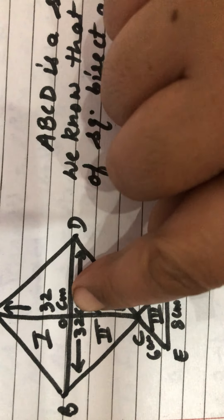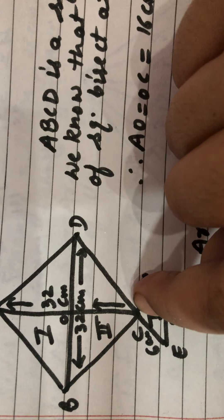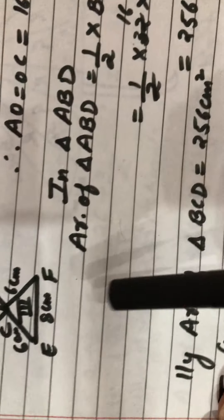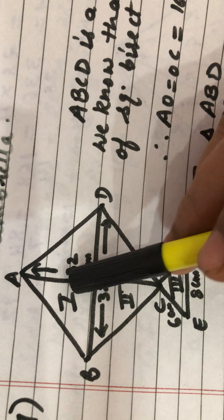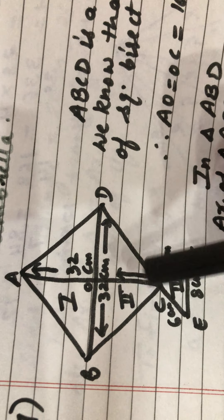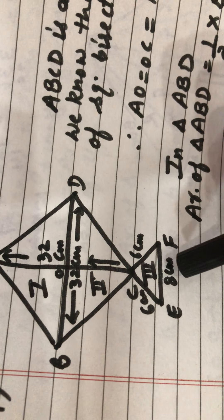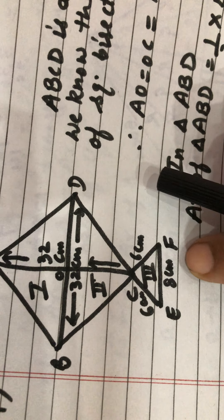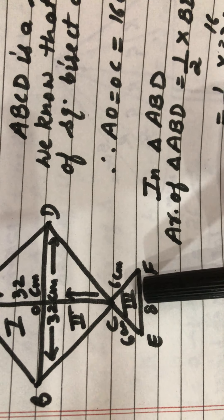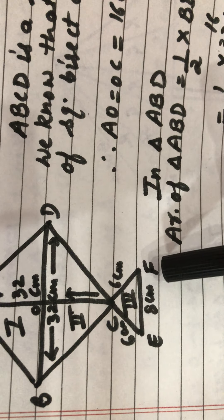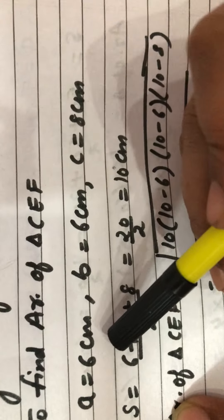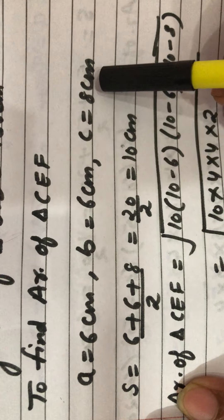Now for the third part: this is an isosceles triangle CEF with two equal sides of 6 cm and base 8 cm. We use Heron's formula to find its area. a = 6, b = 6, c = 8. Semi-perimeter S = (6 + 6 + 8)/2 = 10. Area of triangle CEF = √(S(S−a)(S−b)(S−c)) = √(10 × 4 × 4 × 2).